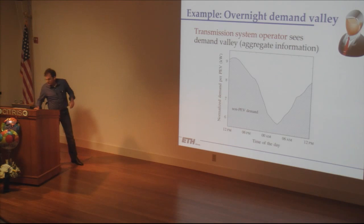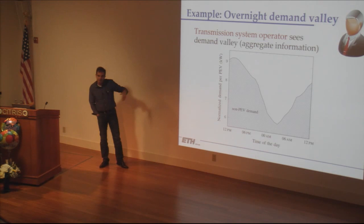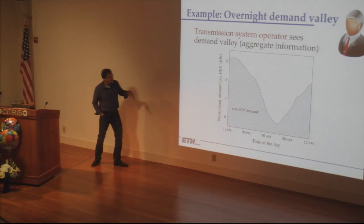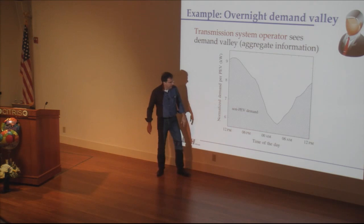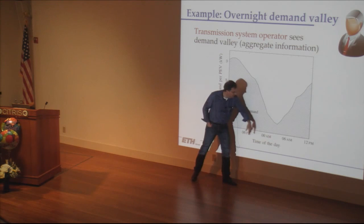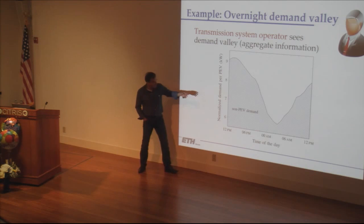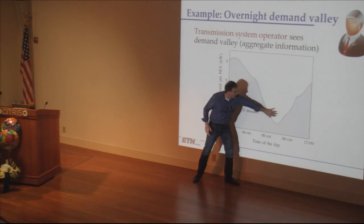You need to coordinate them because at the global level someone cares about how much the aggregate demand is for all the vehicles. A transmission system operator sees this demand valley — non-EV demand during the day, midnight to midnight — and in the middle of the night there's basically not much happening. You'd like, if you now add plug-in electric vehicle demand, to make sure that it happens in that off-peak window so you don't have to use more generation capacity at the times when you already have high demand.